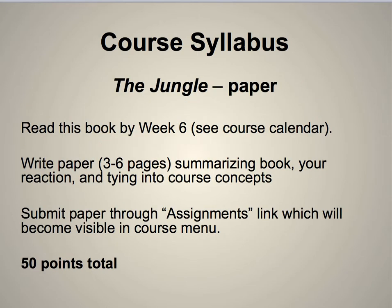You get up to 50 points for a paper — three to six pages. This is really a short commentary after you've read The Jungle. A full credit paper will briefly summarize the book — I don't need you to tell me everything that happens, just enough to show me you've read it — along with your reaction, and tying it into course concepts things you learned in the course up to that point. We'll do this in week six, so it's fairly early in the semester, but you'll have a lot of foundation principles by then. Submit it as a Word document through the assignments link in the course menu.